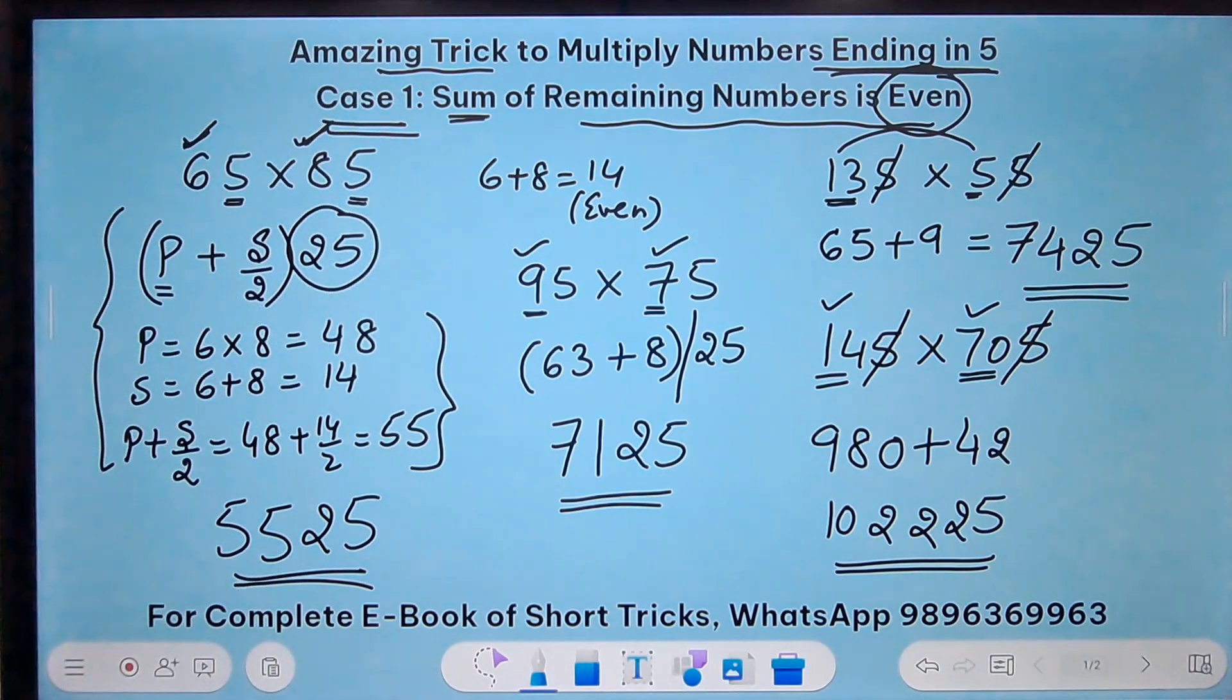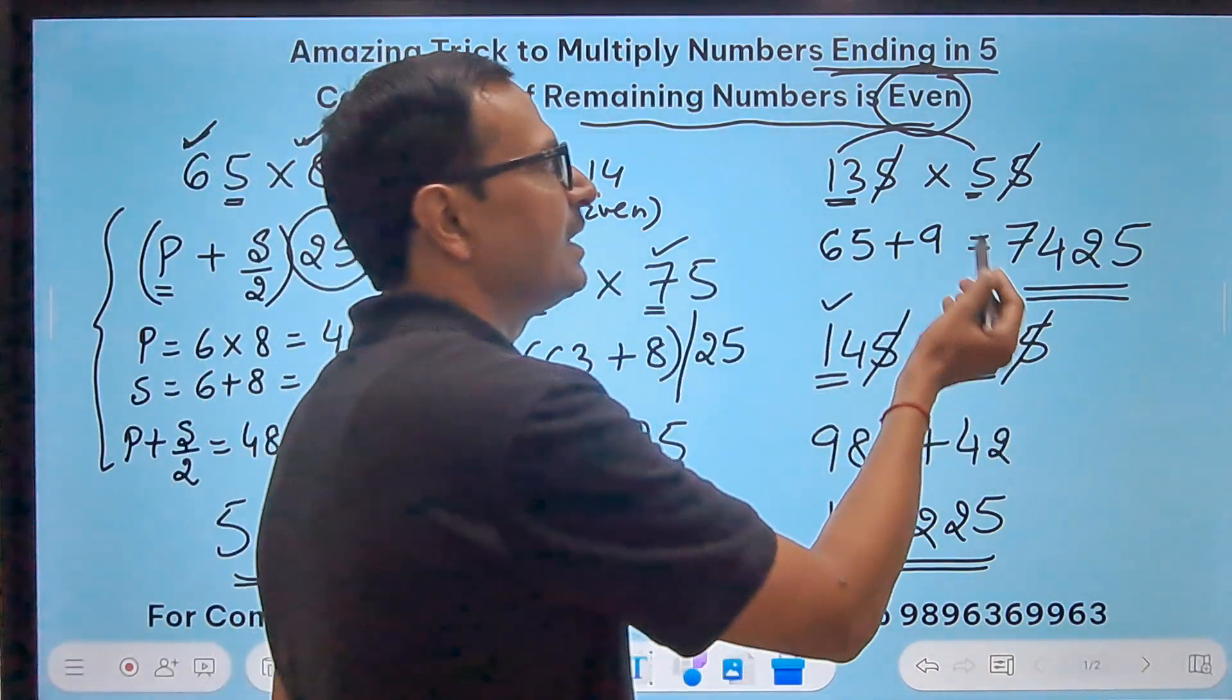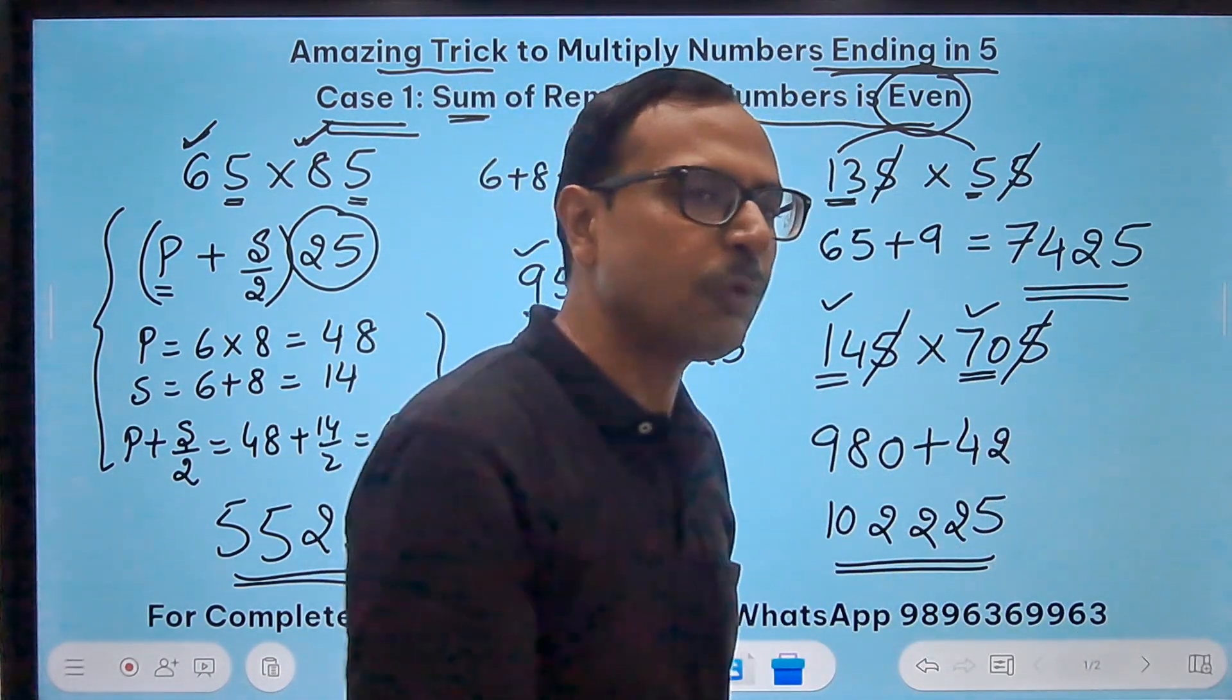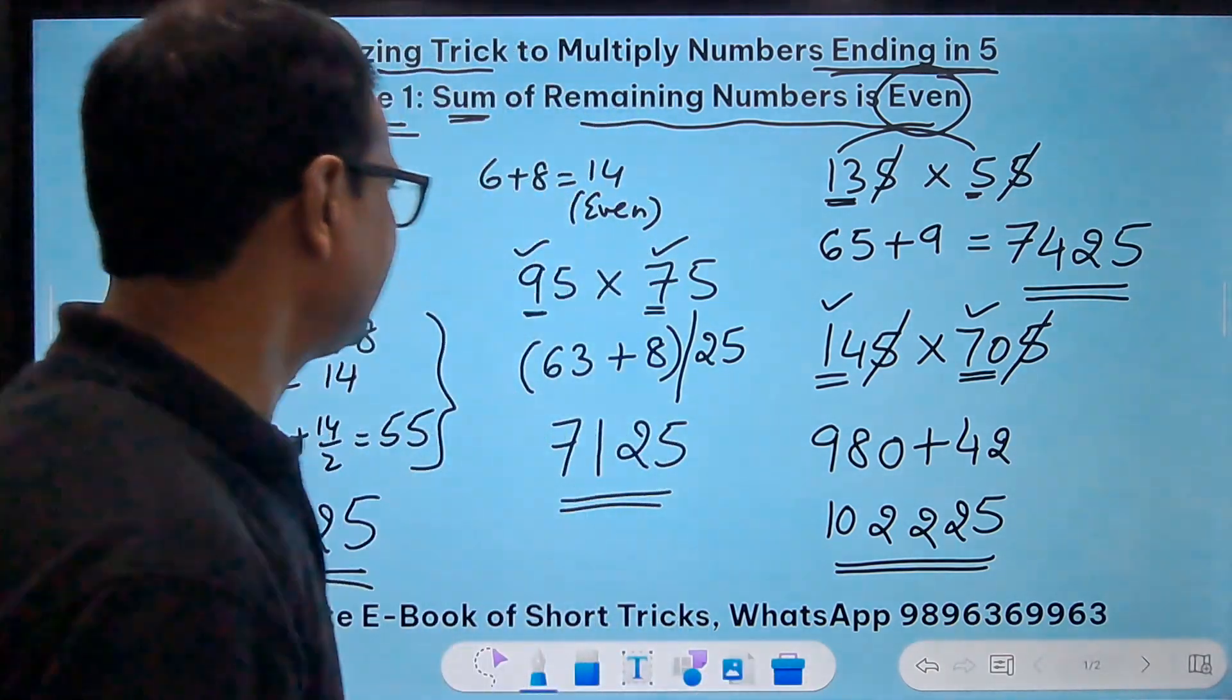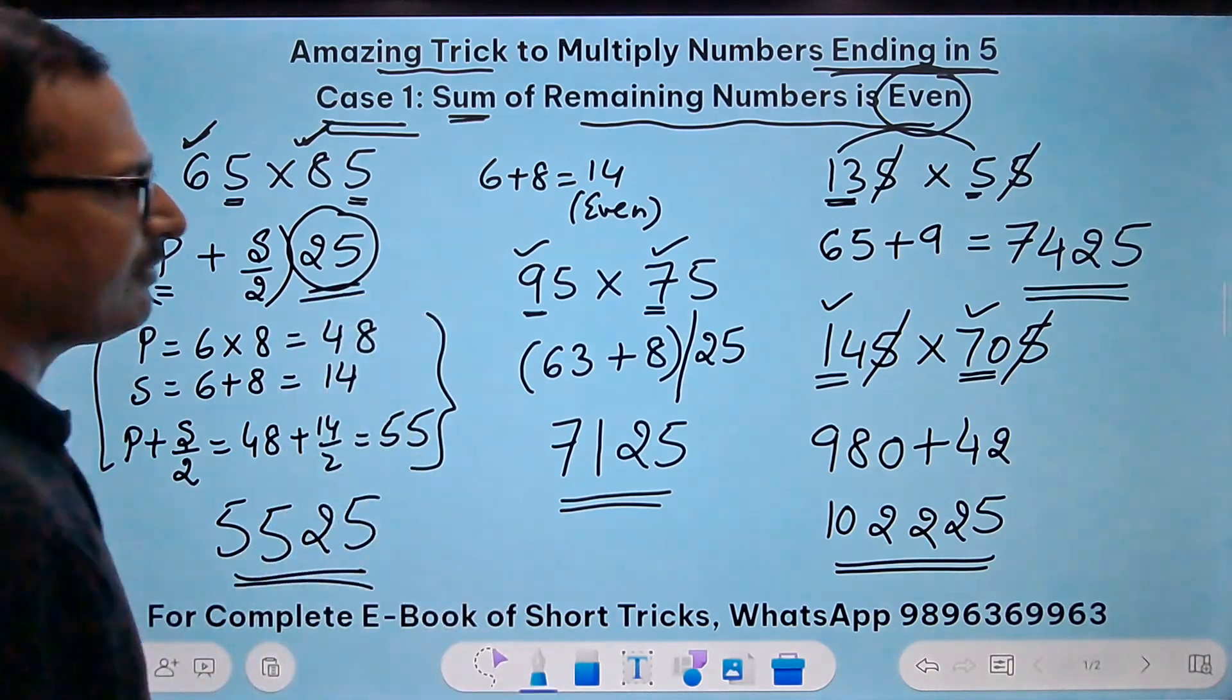This is case 1 where the sum of the remaining numbers is always even. 13 plus 5 is 18, 14 plus 70 is 84, all even numbers. So P plus S by 2 and the suffix number is 25.